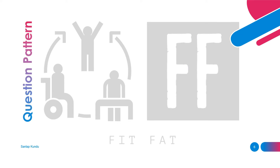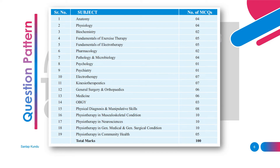Now about the question pattern. There will be 100 MCQ type questions. Here in this picture you can see the subject-wise question distribution — most questions will come from musculoskeletal conditions, neurosciences, medicine and surgery, which you have mostly studied in your third and fourth year.